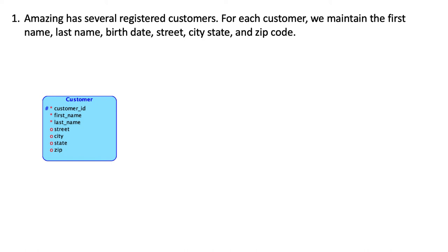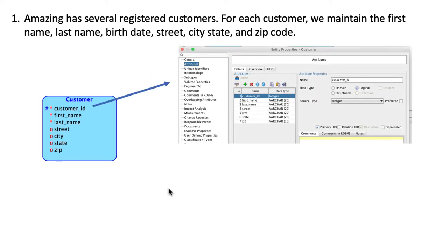All the diagrams I'm showing have been developed using Oracle Data Modeler. Obviously you've got the entity type called Customer. For every entity type that we create we will be creating a primary key, so even though the primary key is not mentioned in the description, we're going to create a primary key called Customer ID.